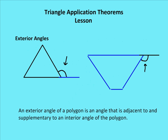Let's talk about some definitions. An exterior angle of a polygon is an angle that is adjacent to and supplementary to an interior angle of a polygon. When we say adjacent to, we mean that it shares the same vertex. So I have an exterior angle here, same vertex, and then I have the interior angle adjacent to the exterior angle. The sum of the measures of the exterior and interior angle are equal to 180 degrees.